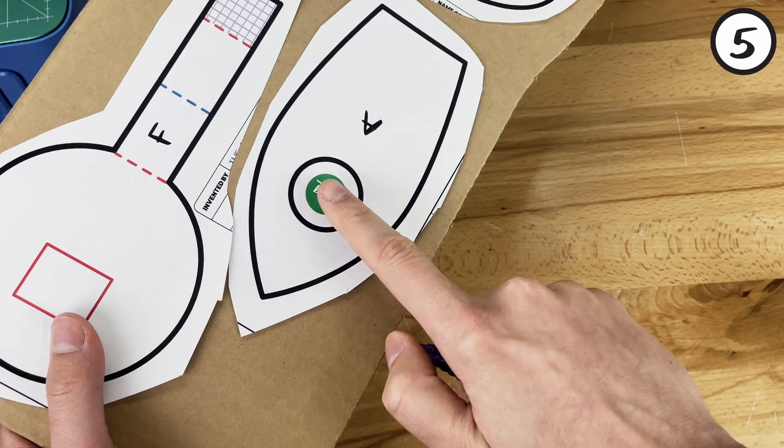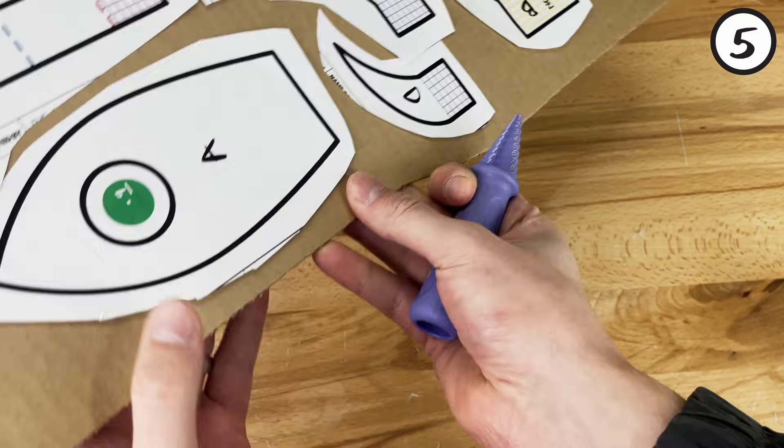Step 5. Punch a hole in the rocket body, Part A, where you see the green circle.